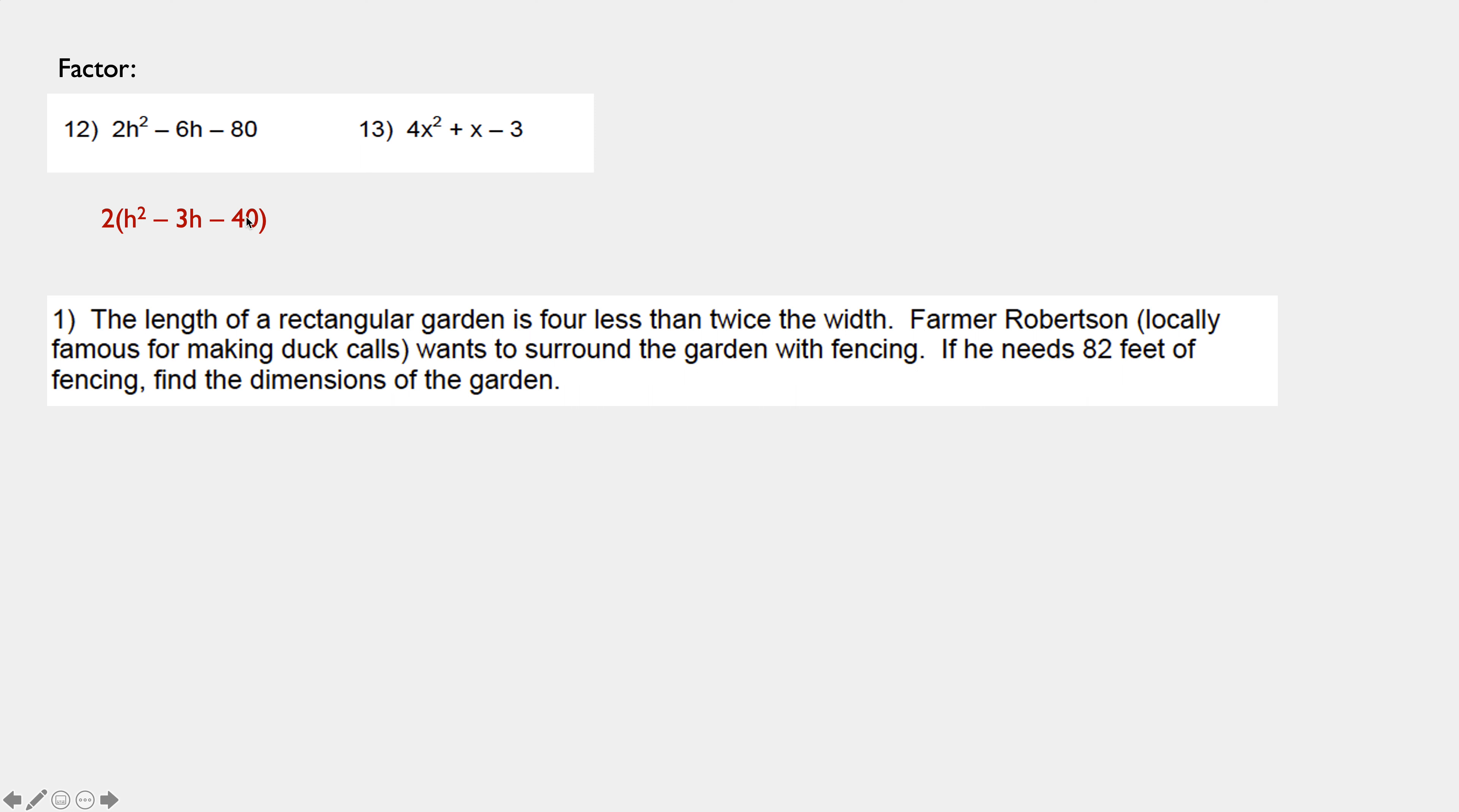I need two numbers that multiply out to negative 40, add up to negative 3, or on the calculator, Y1 is negative 40 divided by X, Y2. And in the last column, you look for a negative 3. If you do that, you'll find the two previous columns say negative 8 and positive 5. So, there are the solutions: 2(H minus 8)(H plus 5).